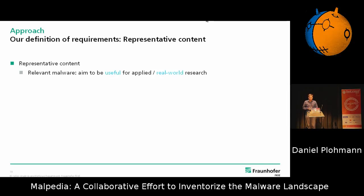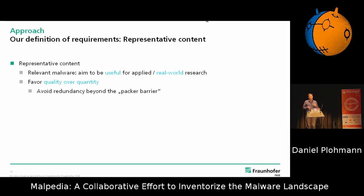For representative content, we want to look at relevant malware — that way it's probably also useful for incident handlers or other instances in the real world doing research. We favor quality over quantity, so it's not the goal to grow the corpus as fast as possible, but rather look beyond what we can call a 'packer barrier.' If you look at how most campaigns are operated, you find polymorphism in how packers are applied to certain versions of malware, but beyond this packer barrier it comes down to way fewer different versions that you can actually observe in the wild — so we can limit ourselves to only representants of a version for one family.